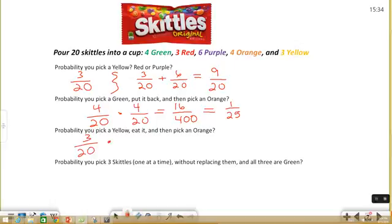And then we're going to pick an orange one. Well, there's 4 oranges, but the key with this is we ate the yellow Skittle. So it's not there anymore when we go to pick our orange ones. There's no longer 20 Skittles to choose from. There's only 19. So that denominator has to change.